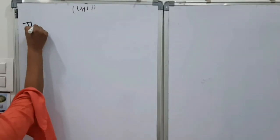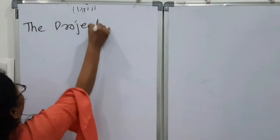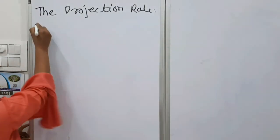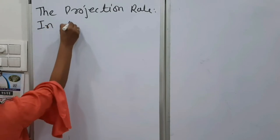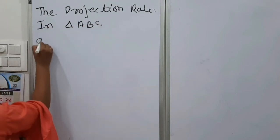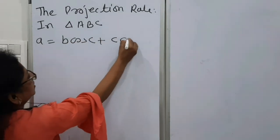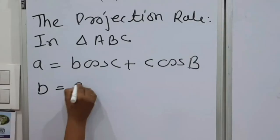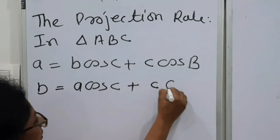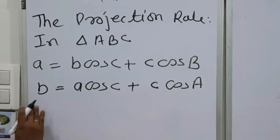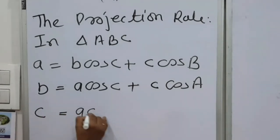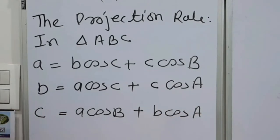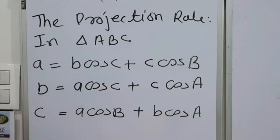First we will see the statement. Here also there are three statements. In triangle ABC, a equals to b cos c plus c cos b. B equals to, can you guess? B equals to a cos c plus c cos a. And c equals to a cos b plus b cos a. So these are the three statements for projection rule.